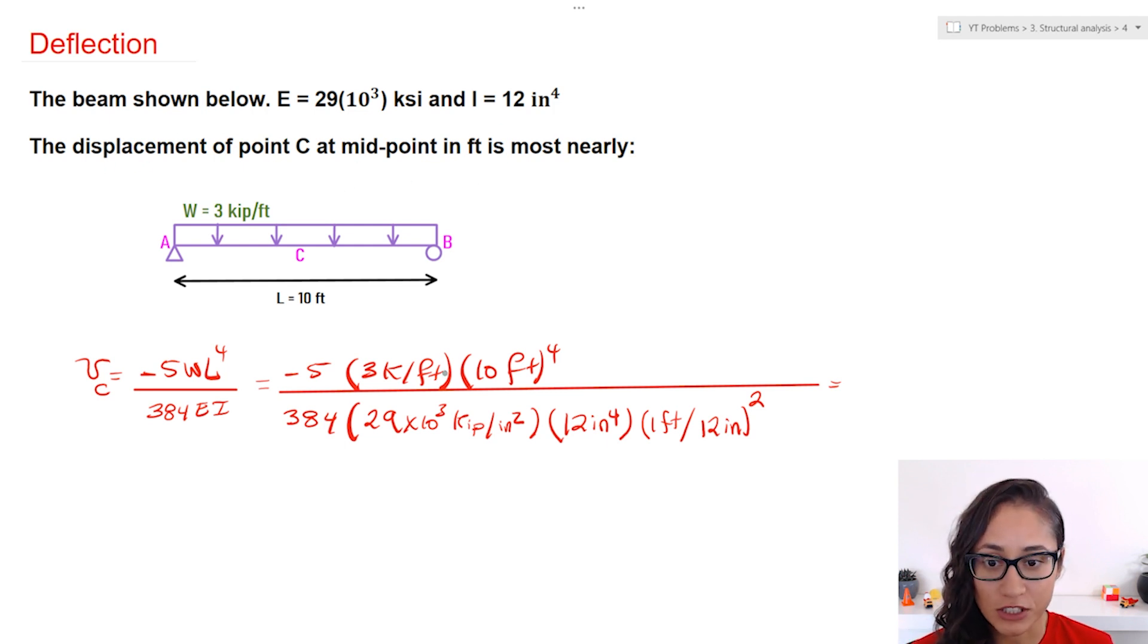So if we look at here, this is going to cancel and we're left with feet to the power of 3. Now if we look at the denominator, I have inches squared here cancels with inches to the power of 4 so I'm left with inch squared. Now I have to convert inch squared to feet squared, and so that's what I did here.